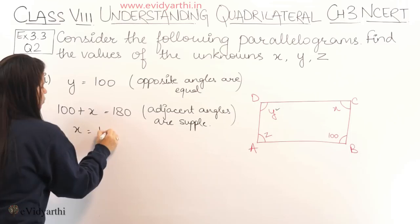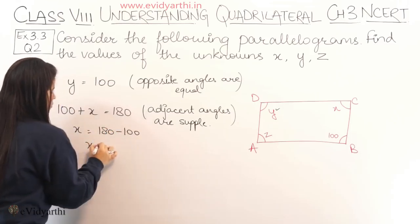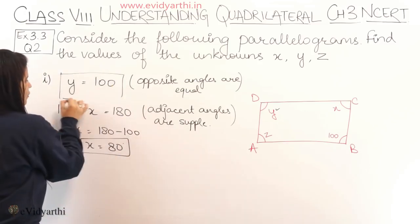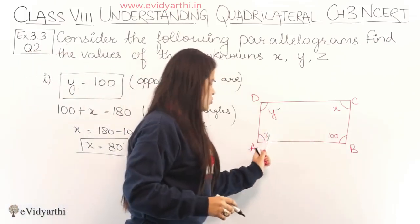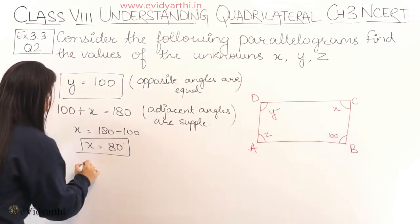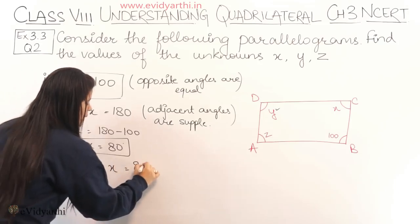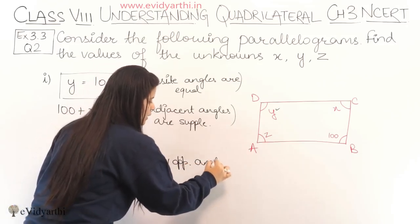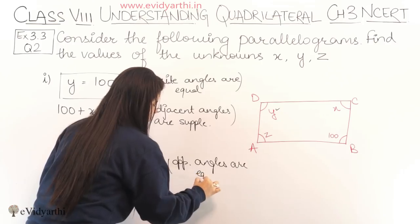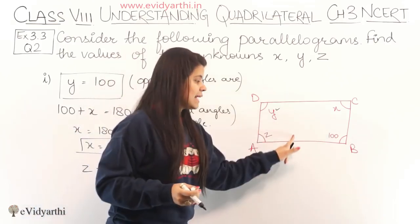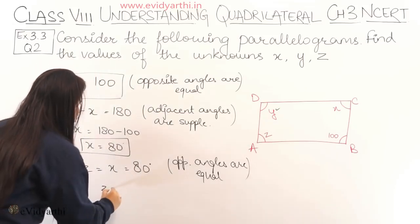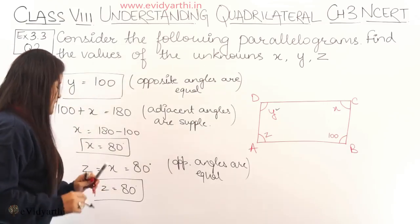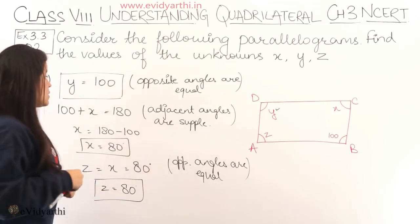So x = 180 - 100 = 80°. We have x = 80°. Since x and z are opposite angles, z is also equal to x = 80°. So x = 80°, y = 100°, and z = 80°. This was part number 1.